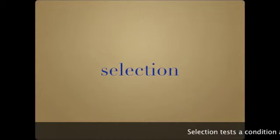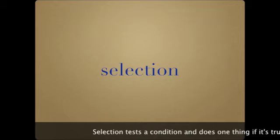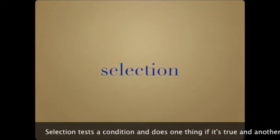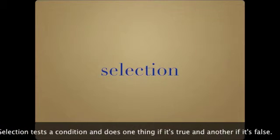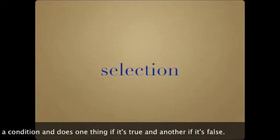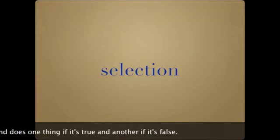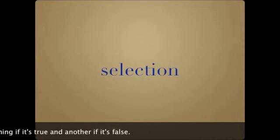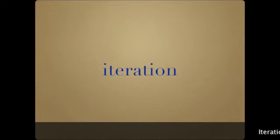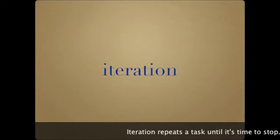Selection tests a condition and does one thing if true, another if false. It's like the psychology your parents used when they said, 'If you do the dishes, you can drive the car. If not, you're staying home.' The last logical construct is iteration.